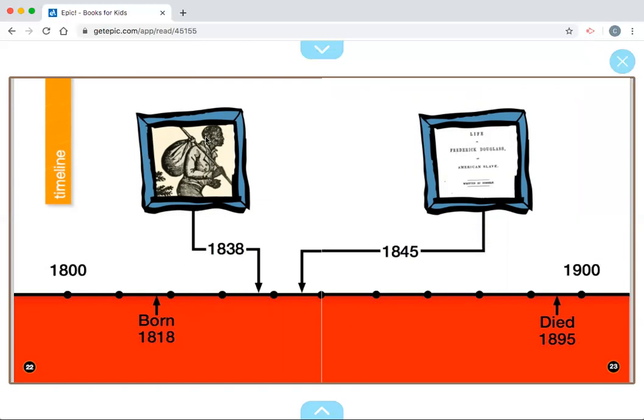I remember this part of the biography, 1838, which was 20 years later after he was born. He escaped from slavery so he can go up north. And I remember this part, where he became an author and wrote a book about his life story, about how he was a slave and how bad it was. And he wrote that in 1845, when he was 27 years old.